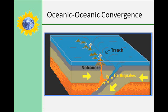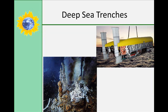When two oceanic plates converge, because they are dense, one runs over the top of the other, causing it to sink into the mantle and a subduction zone is formed. The subducting plate is bent down into the mantle to form a deep depression in the seafloor called a trench. Trenches are the deepest parts of the ocean and remain largely unexplored. Manned or unmanned submersible vehicles have explored small parts of trenches discovering new species, like the fish and tube worms that you see here, and amazing ecosystems.